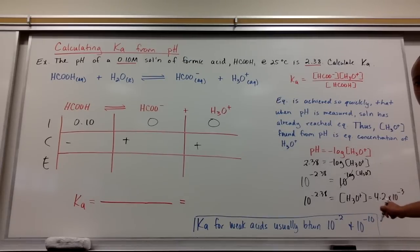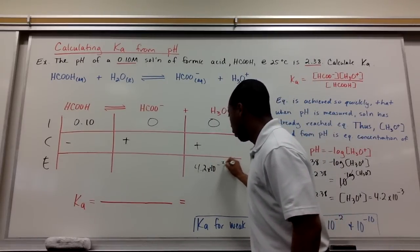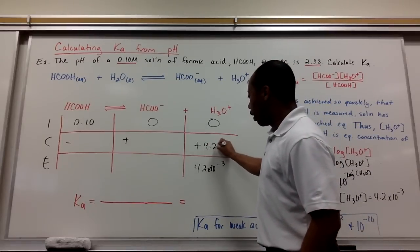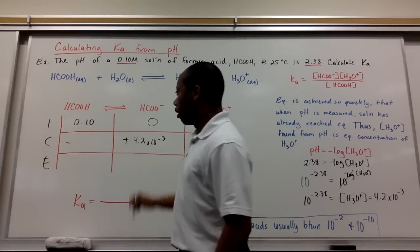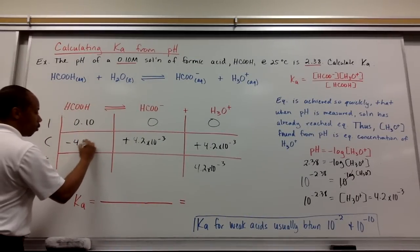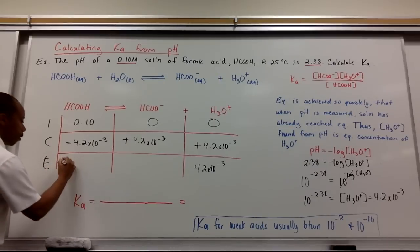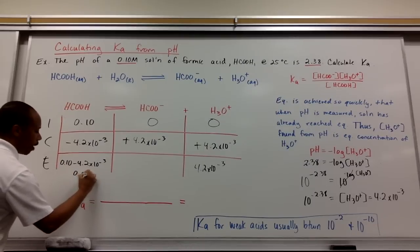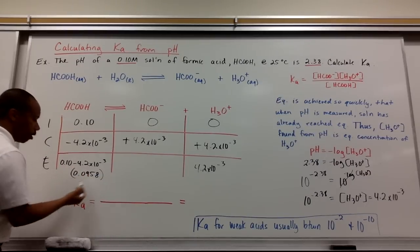You must simplify this, and you will get 4.2 times 10 to the negative 3rd molar. That is your concentration at equilibrium for hydronium. So we know our change must have been 4.2 times 10 to the negative 3rd for both. And since they're all in a one-to-one ratio, this is a monoprotic acid, my decrease was also the same. So at equilibrium, I have 0.10 minus 4.2 times 10 to the negative 3rd. That's going to give you about 0.0958.